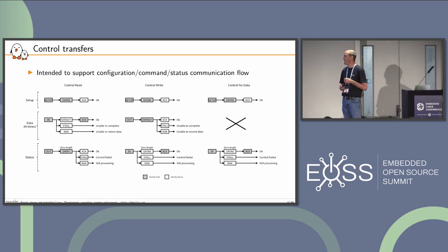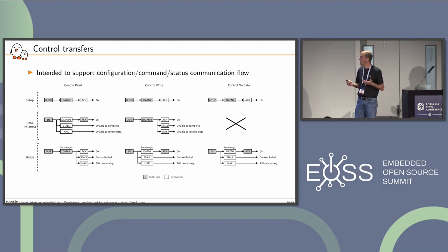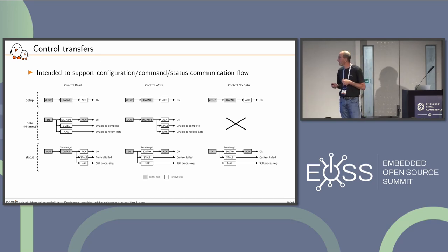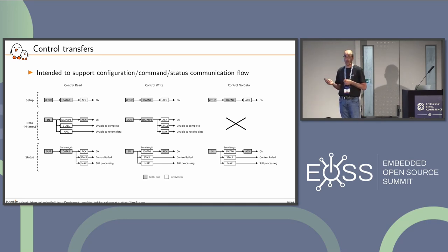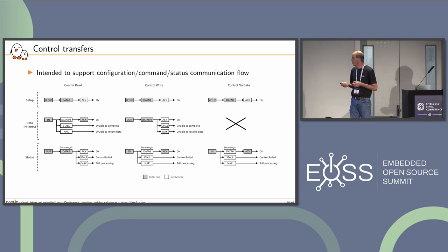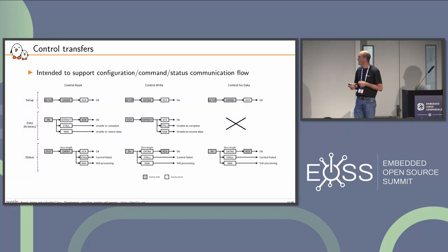The first stage is the setup stage, made of the setup token and related data, used to identify the kind of request from the host. Then there is a data stage: for a control read, the host requests data and the device sends it; for a control write, the host sends data. The last stage is the status stage, which acknowledges all previous stages — setup and data. Some control transfers have no data stage, only setup and status stages.